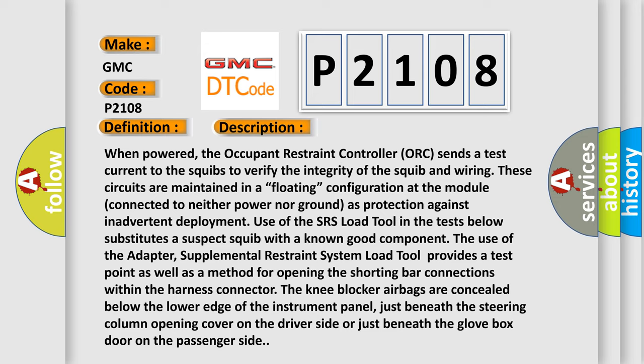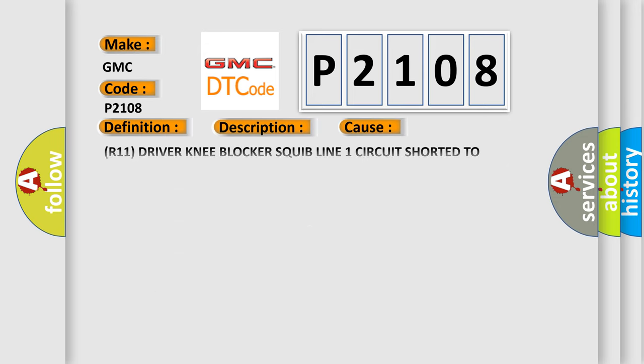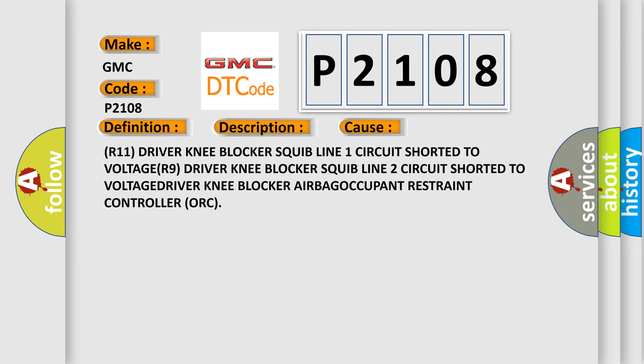This diagnostic error occurs most often in these cases: driver knee blocker squib line 1 circuit shorted to voltage; driver knee blocker squib line 2 circuit shorted to voltage; or a fault in the knee blocker airbag occupant restraint controller (ORC).